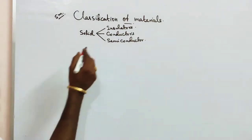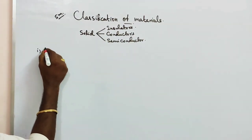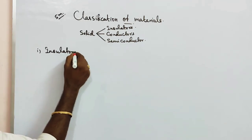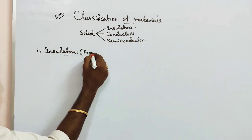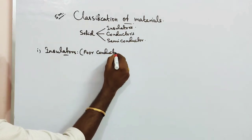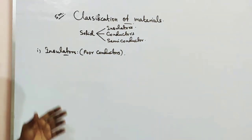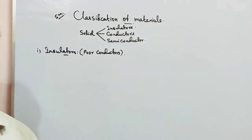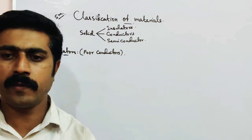First we will talk about insulators. Insulators are also called poor conductors. They do not allow electric current to pass through them.